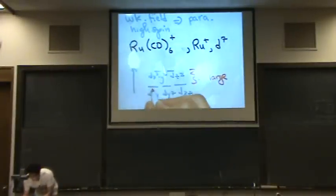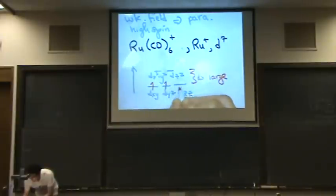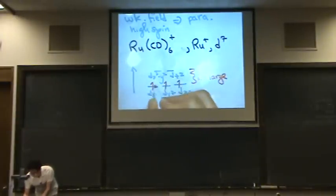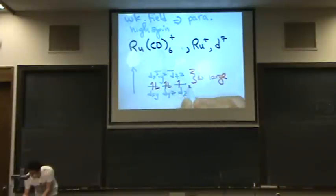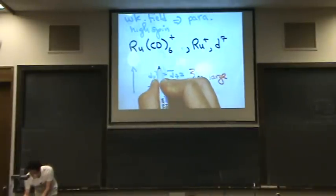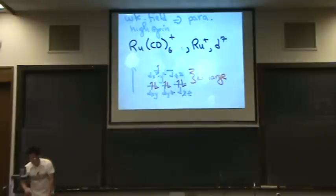So we've got one, two, three, delta is large, so I'm going to continue on the lower level. Four, five, six, and now I'll finally go up to the upper level. Seven.